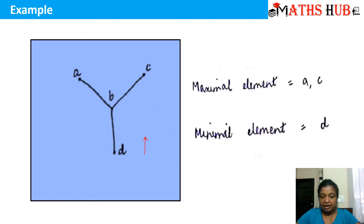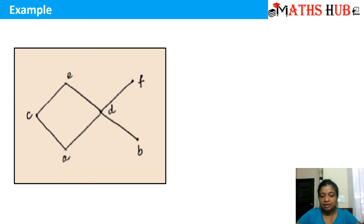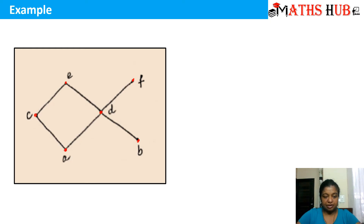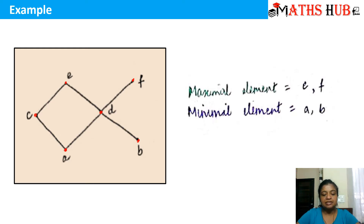In the next Hasse diagram, A and D are lying at the lowest positions. At the next level we have elements C and D, and at the top level we have E and F. Checking for the maximal elements: E and F are at the topmost positions and no other element is beyond them, so the maximal elements are E and F. Looking at the bottom positions, A and D are lying below, so A and D are the minimal elements.